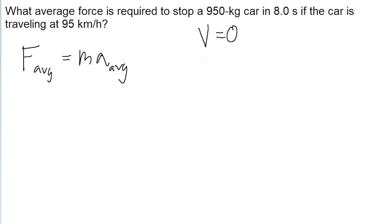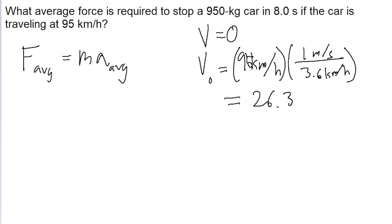And the initial speed of the car, or v naught, is given as 95 kilometers per hour. Now in order to use our equations, we want to convert this from kilometers per hour into meters per second. We can do this by dividing by 3.6. That's because 1 meter per second is equal to 3.6 kilometers per hour. Put this into a calculator, and our initial speed is about 26.39 meters per second.